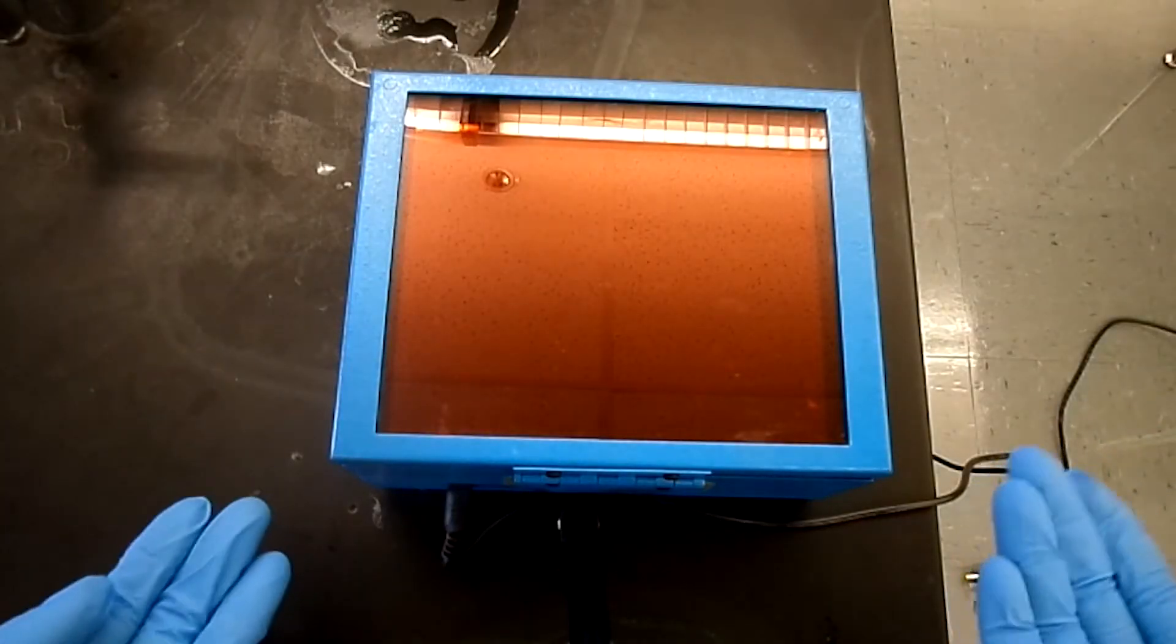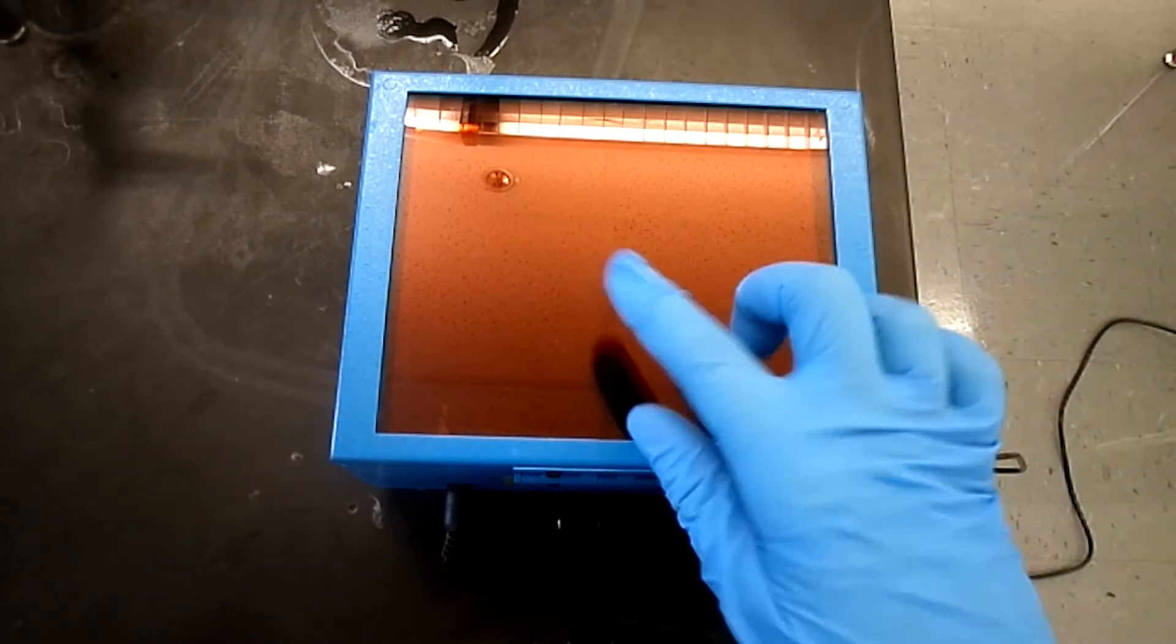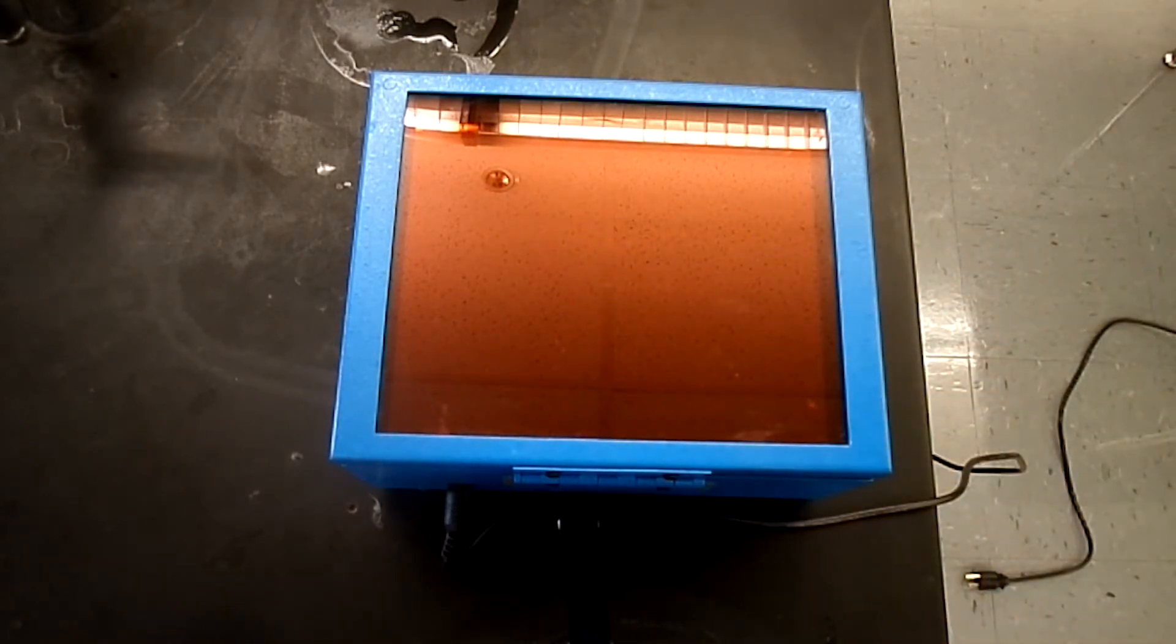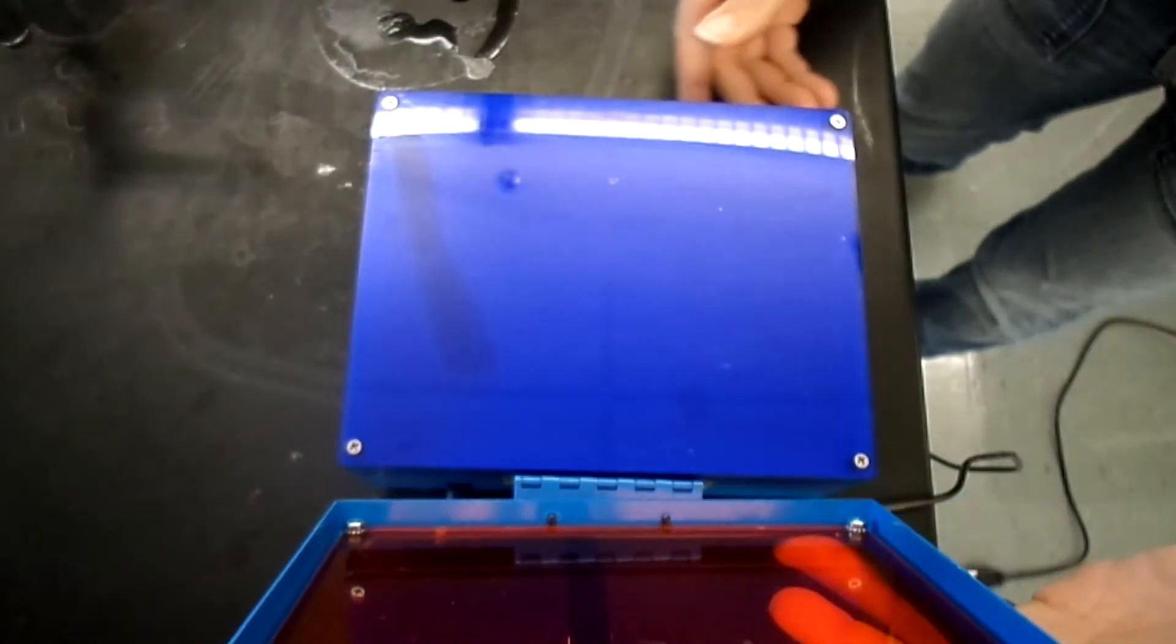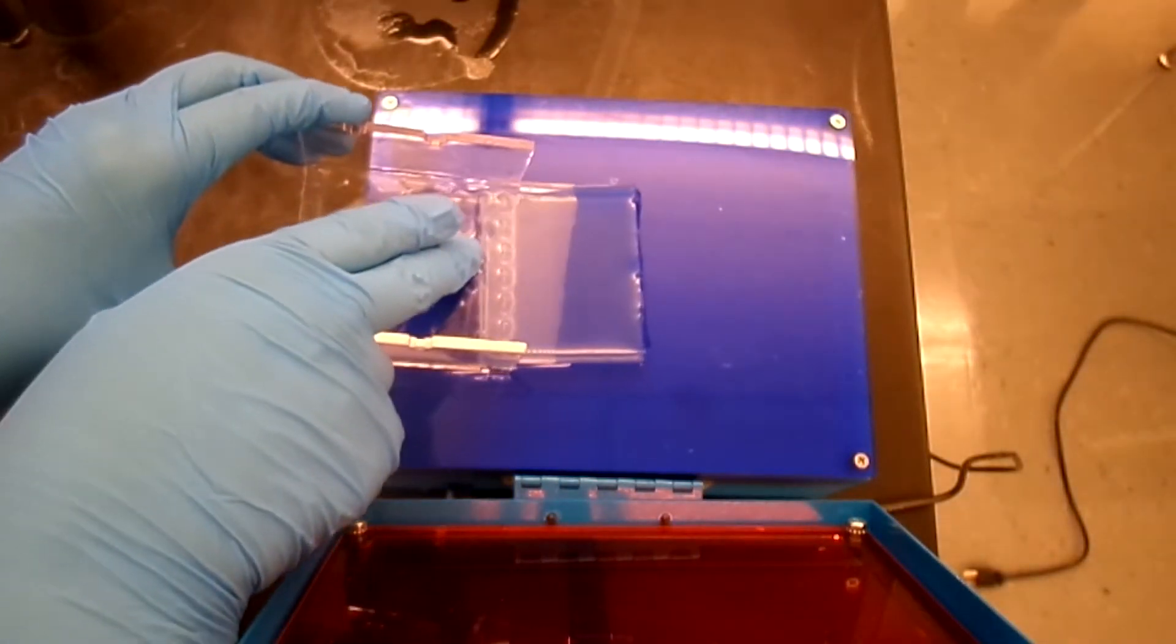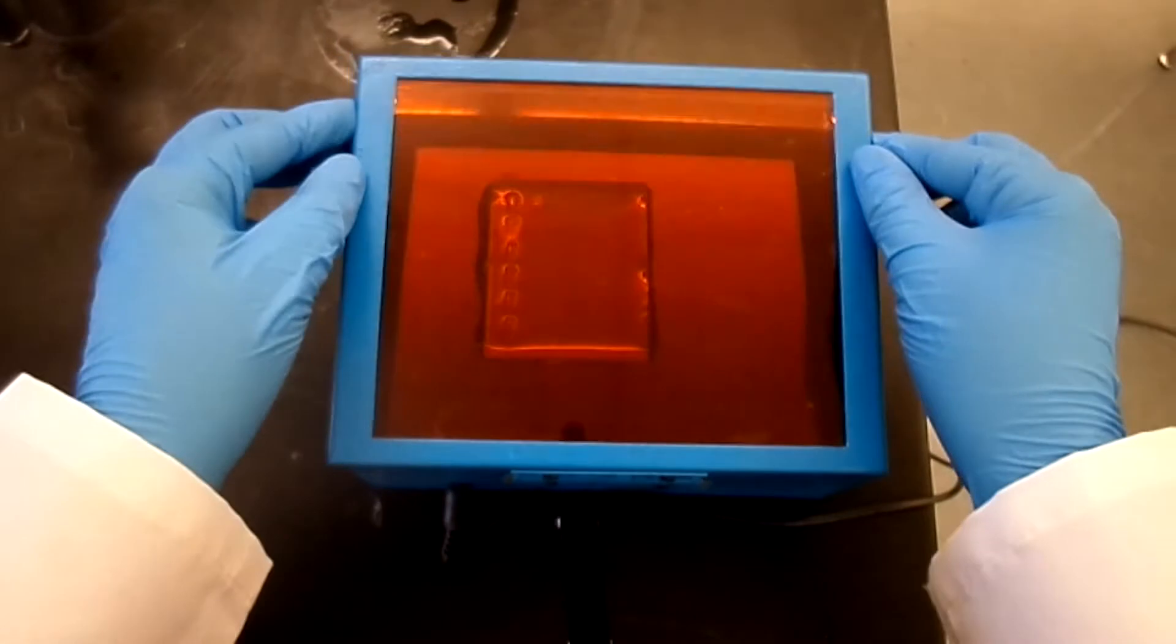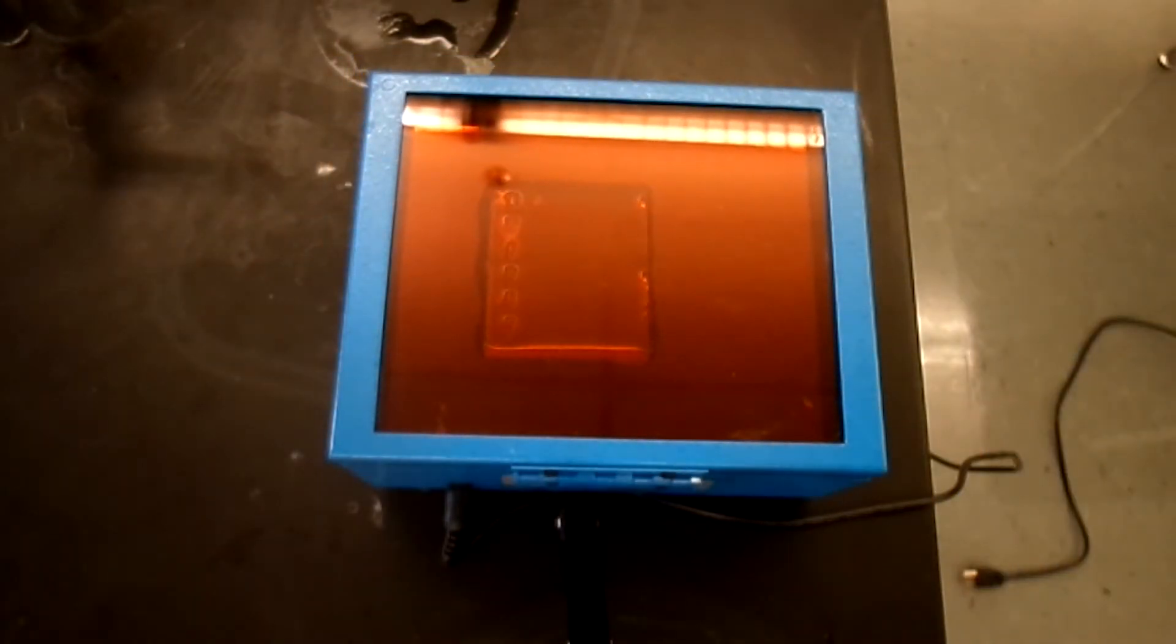This is our transilluminator, which we will use to look at the DNA. We're going to take our gel and put it on here and then turn off the lights. Now we're going to close the top and turn it on.